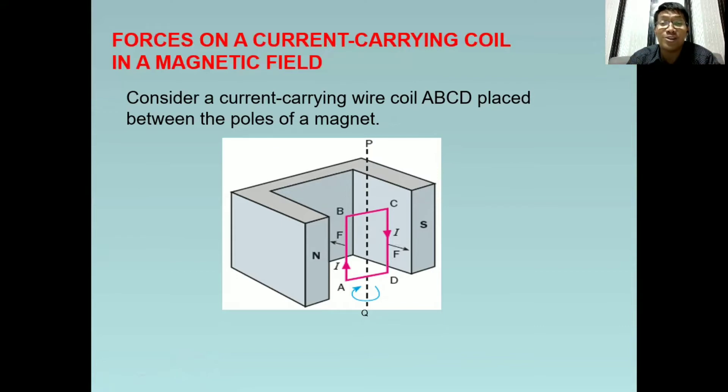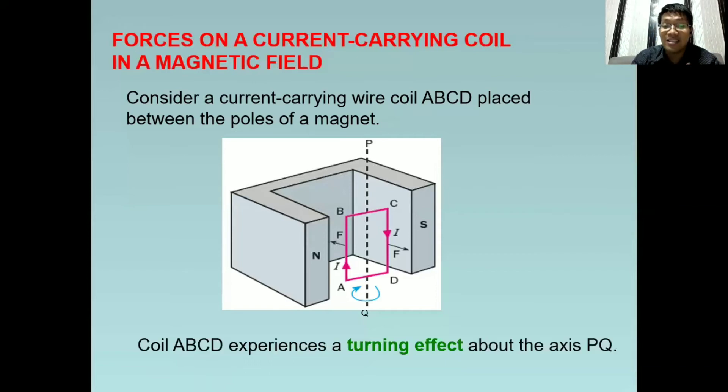So in what direction will the coil wire move? If you notice, the movements are opposite. It only means that it will rotate. This coil will rotate because of the forces present here, and this rotation is what we call the turning effect.